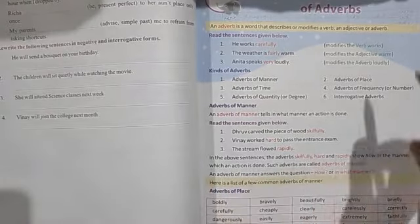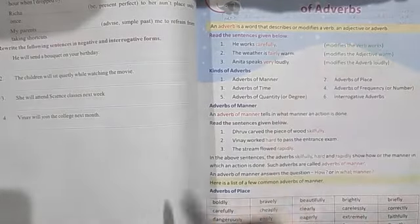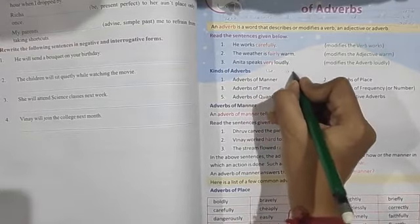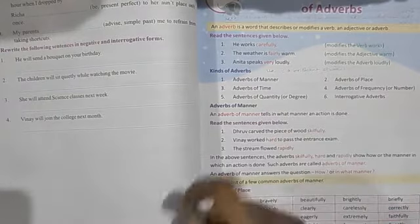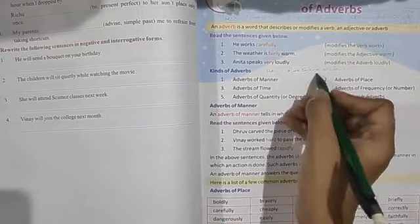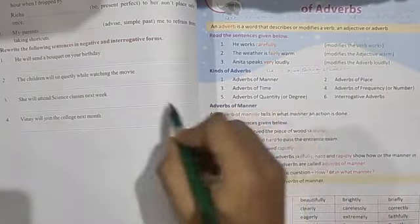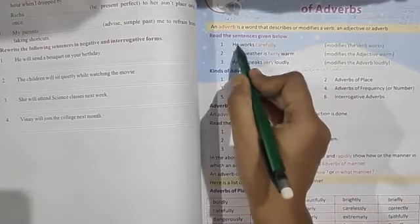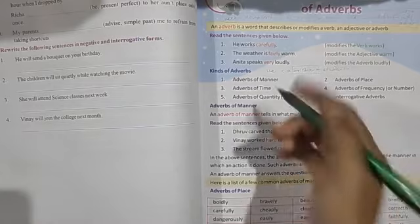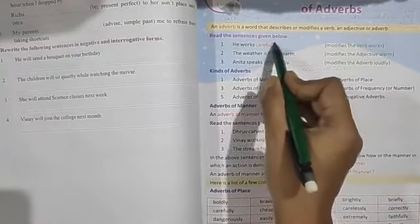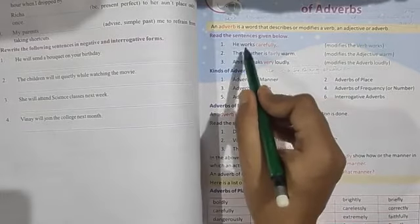Now let's see how an adverb modifies all three. We know adjective modifies a noun — for example, 'He is a brilliant student.' Here 'brilliant' is the adjective because it is describing the noun 'student.' Now let's see how an adverb modifies a verb. For example: 'He works carefully.' Here 'works' is the verb. 'Carefully' describes how he works, so 'carefully' is the adverb modifying the verb.